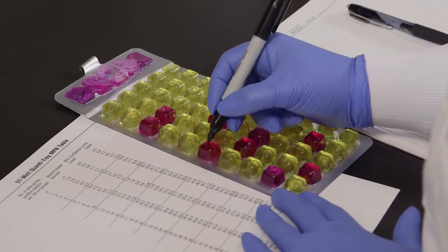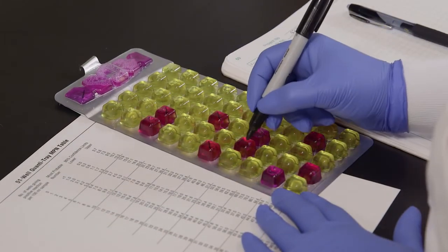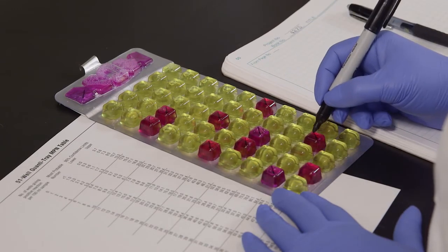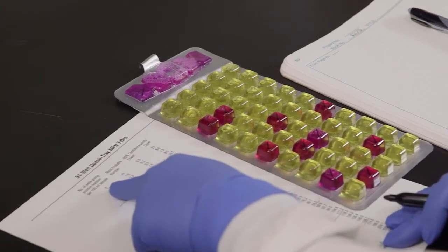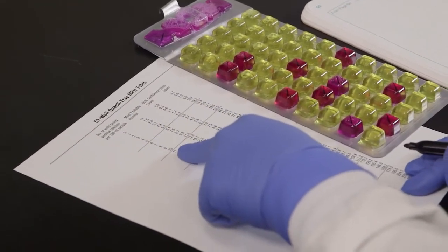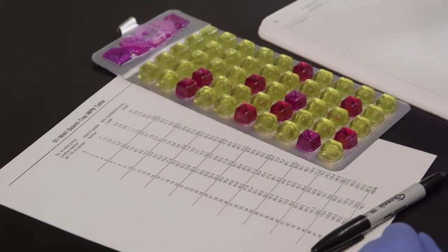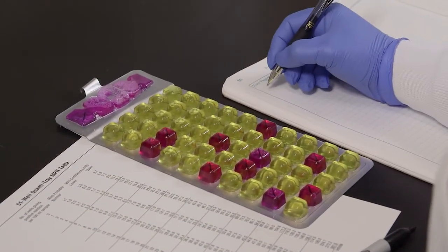To determine the number of total coliforms, count the red or magenta positive wells, and then refer to the MPN table included with the QuantaTrays. The most probable number of total coliforms for this example is 12.4 per 100 ml. If using QuantaTray 2000, count the overflow well as a large well.